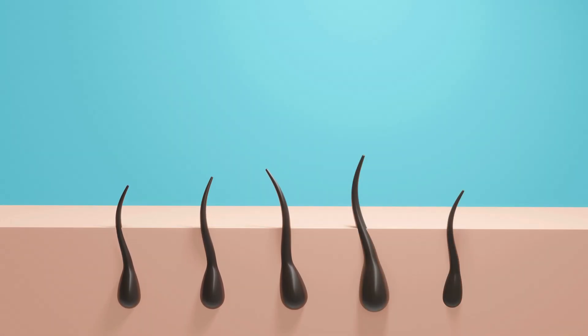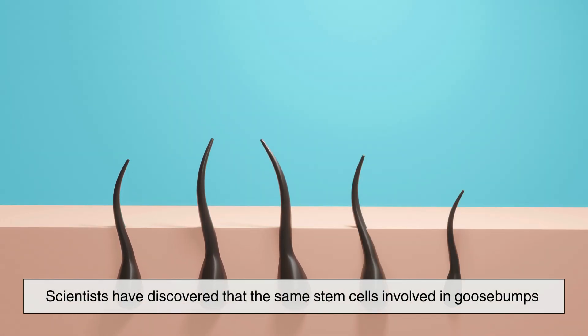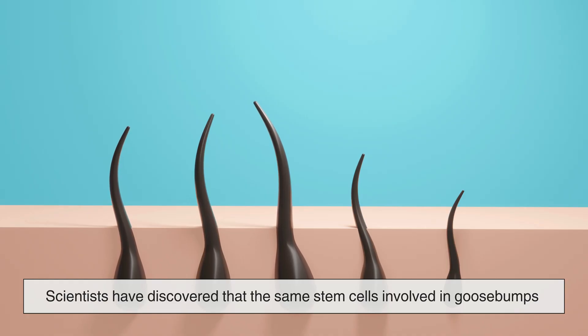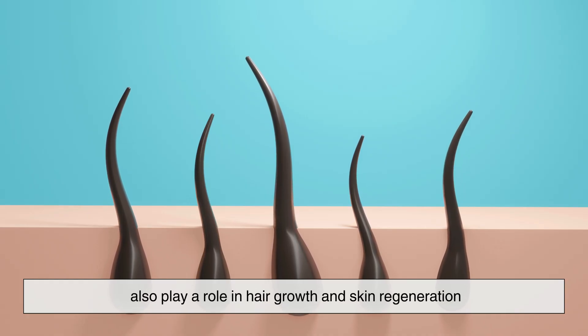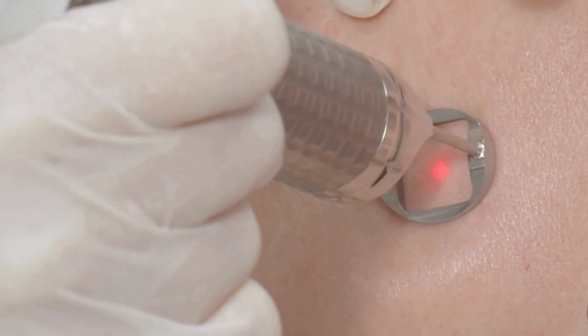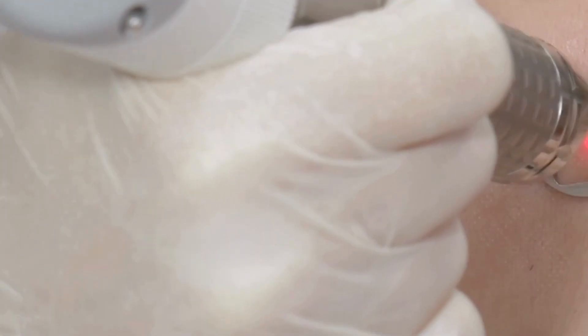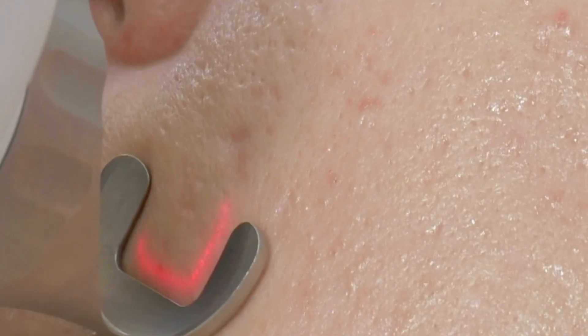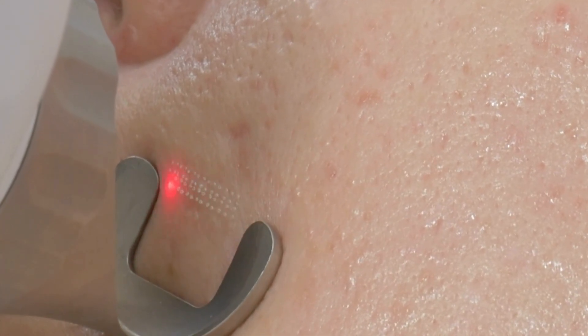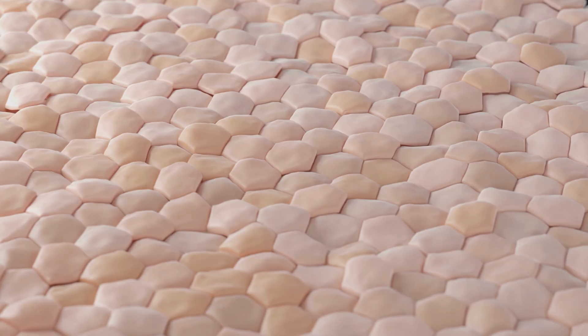In fact, scientists have discovered that the same stem cells involved in goose bumps also play a role in hair growth and skin regeneration. This means that what began as a simple reflex may still contribute to skin health and repair, revealing that even seemingly obsolete features can have hidden benefits. It's a reminder that evolution often repurposes old systems rather than discarding them entirely.